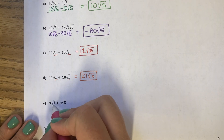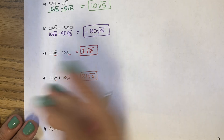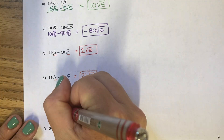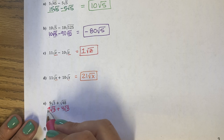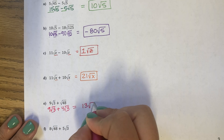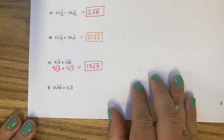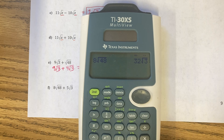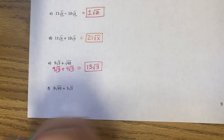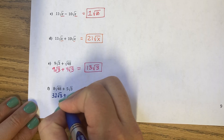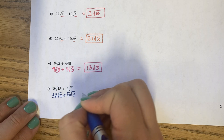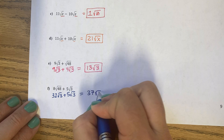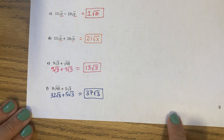And 9 root 3 — root 3 cannot reduce. The square root of 48 is 4 root 3, so they're both root 3s: 9 plus 4 is 13 root 3. And 8 square root 48 is 32 root 3. So 32 root 3 plus 5 root 3 — my roots match — 32 plus 5 would be 37 root 3.